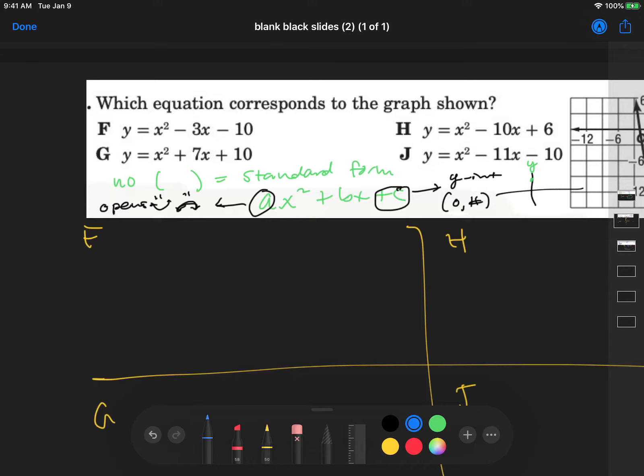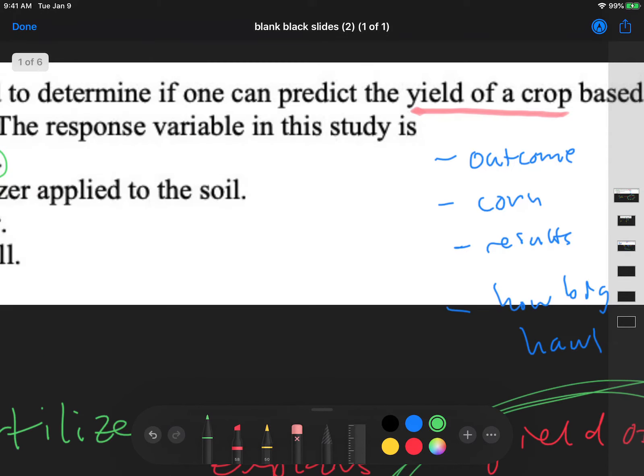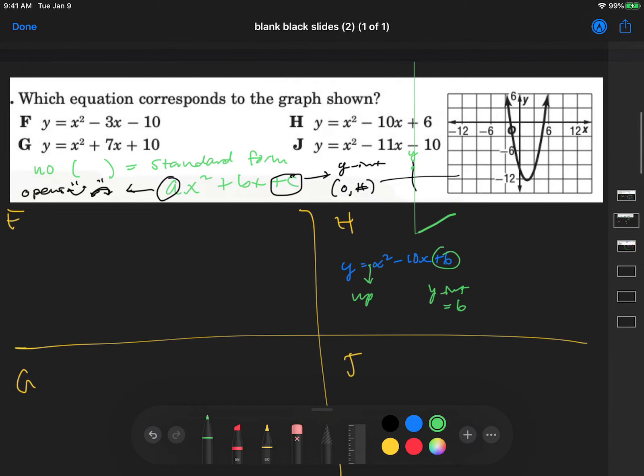Let's start with H. y equals x squared minus 10x plus 6. This opens up, which our graph has, and then our y-intercept is 6. Well, whoops. If you look at our graph, if you look at our graph here, 6 would have been way up here. In our graph, let's just use our graph here.